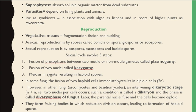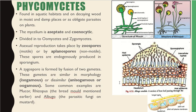Phycomycetes are a group of fungi found in aquatic habitats, on decaying wood in moist and damp places, or as obligate parasites on plants. The mycelium is aseptate and coenocytic. They are divided into Oomycetes and Zygomycetes. Asexual reproduction takes place by zoospores, which are motile, and by aplanospores, which are non-motile.